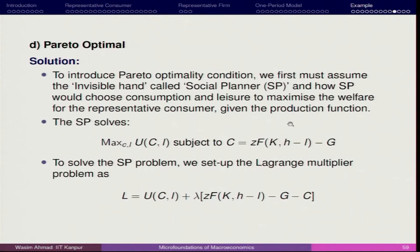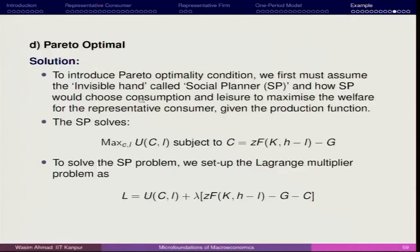Now for Pareto-optimality, we have to assume certain aspects. The third person we are introducing into the model is the social planner. How would the social planner choose consumption and leisure to maximize the welfare of the consumer? For that, we are optimizing again: maximize over C and L the utility U(C, L), subject to ZF(K, H minus L) — which is the production function — minus the amount of output that goes to the government, which is equivalent to the tax.